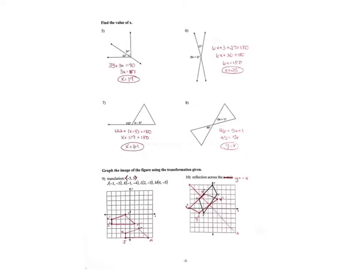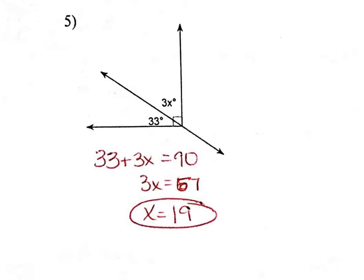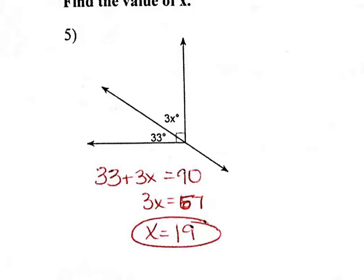All right, so questions five through eight, we're finding the value of x, so no proof involved, you're literally just trying to solve. So question number five, this is an example of complementary, so remember that terminology, complementary means they add to equal 90, so that's how I've set this up. And then simple algebra will give me x equals 19.